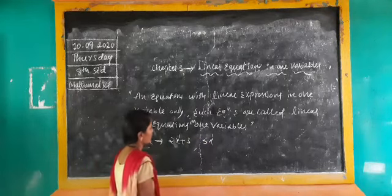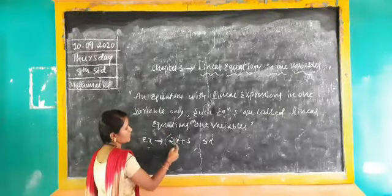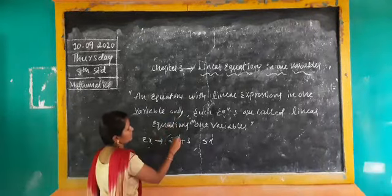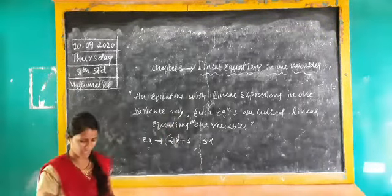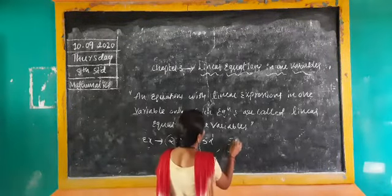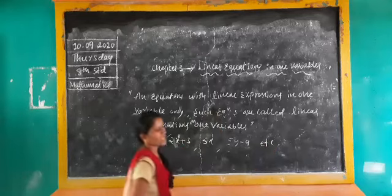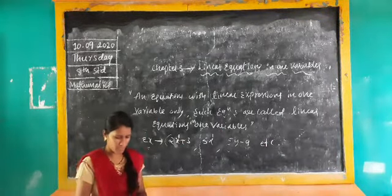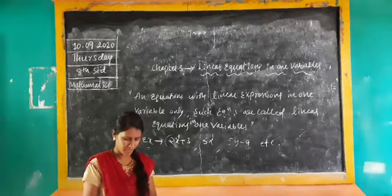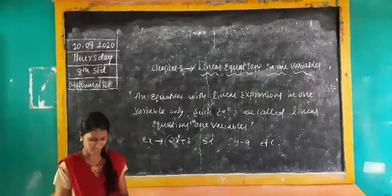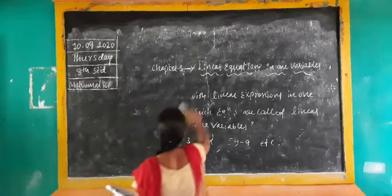These are degree 1. Here 3 is the constant term and the variable is x — one variable only. Degree 1 means it is a linear equation. Another example: 5y minus 9. These are all examples of linear expressions. Now, Exercise 3.1 — solve the following equations.